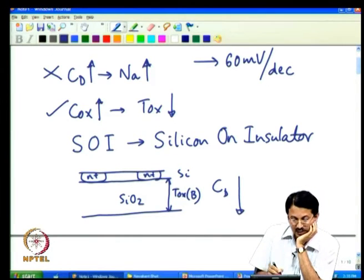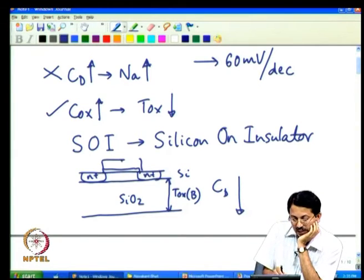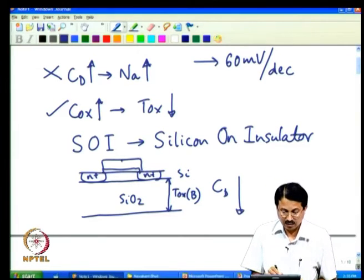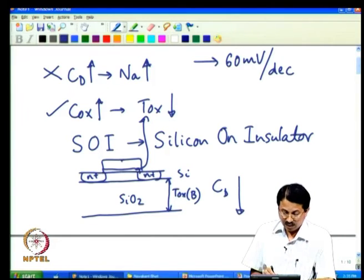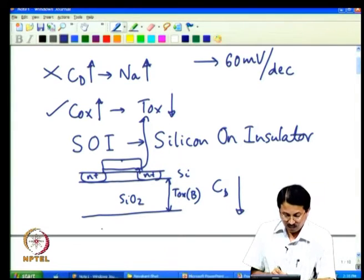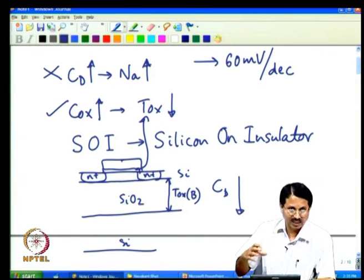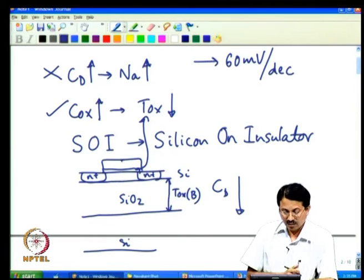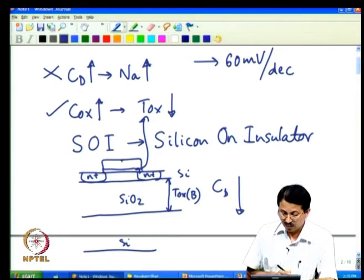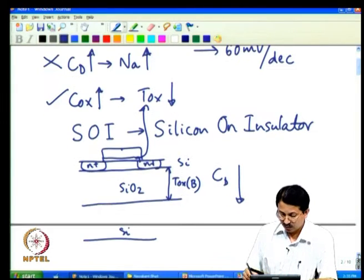This thick oxide is sometimes called the buried oxide thickness, to distinguish it from the gate oxide thickness Tox at the top. The buried oxide sits underneath the channel, with silicon underneath as well — that is why it is called silicon on insulator, as if a thick insulator has been interposed in the silicon substrate.